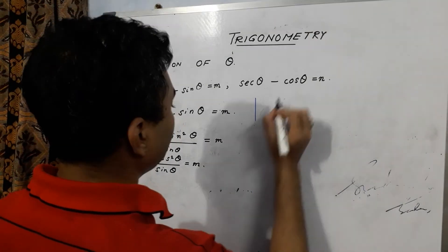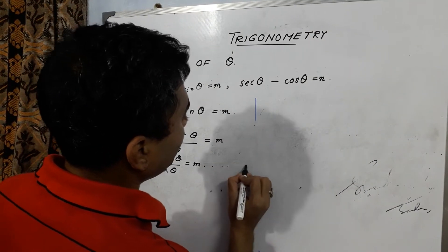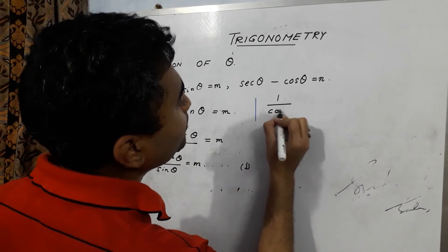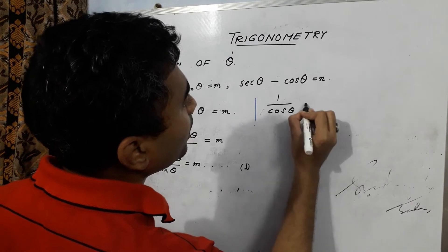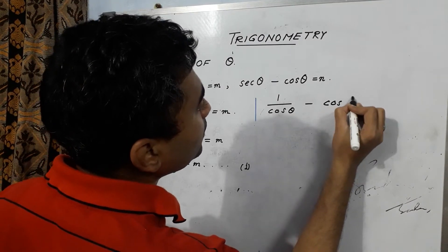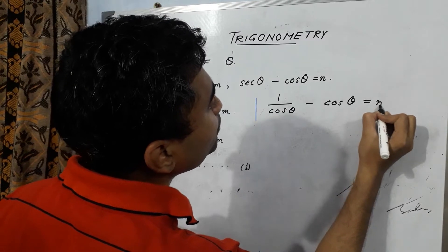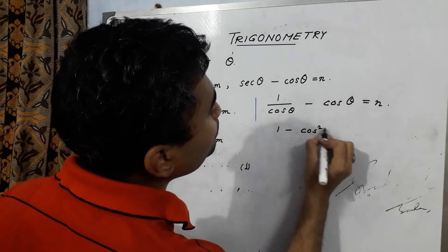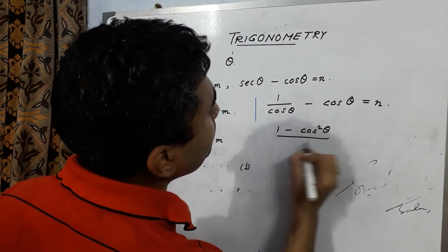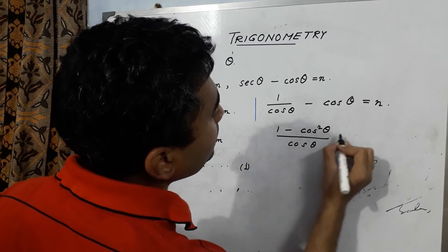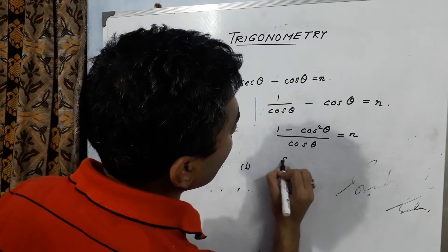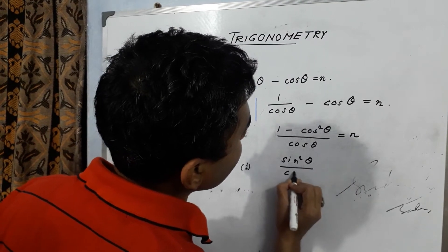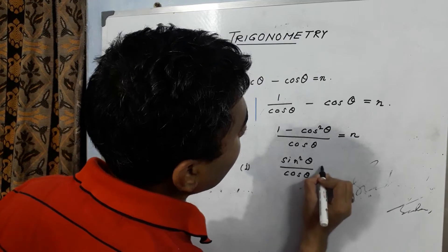Doing the same steps for n: sec theta is 1 by cos theta minus cos theta. So 1 minus cos square theta by cos theta is equal to n. Hence sin square theta by cos theta is equal to n.